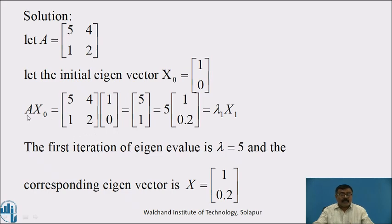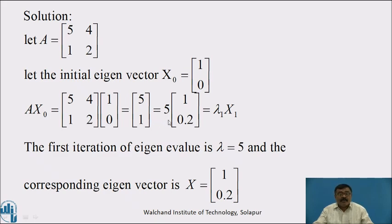We consider the initial eigenvector X0 as the column matrix [1; 0]. By the power method, take the multiplication between the square matrix A and the initial eigenvector X0. A × X0 = [5, 4; 1, 2] × [1; 0] = [5; 1]. Taking the largest element 5 as a common factor and simplifying, that becomes 5 × [1; 0.2] = λ₁ × X1. So the first iteration gives eigenvalue λ = 5 and eigenvector X = [1; 0.2].